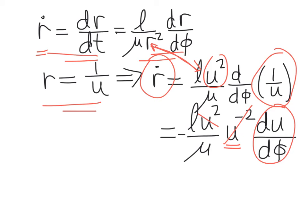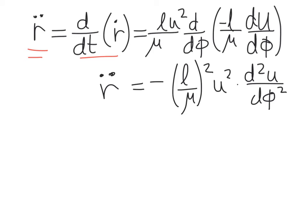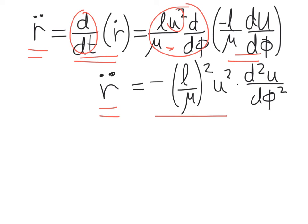Next we need the second time derivative of r, since our dynamical equation involves r double dot. R double dot is the time derivative of r dot, and replacing the time derivative with the phi expression — where r squared in the denominator becomes u squared in the numerator — we take the phi derivative of r dot, which was minus L over mu times du by d phi. This gives r double dot equals minus L squared over mu squared u squared times the second phi derivative of u.